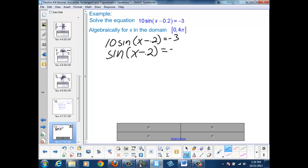Sin(x - 0.2) = -0.3. Now I need to get rid of the sine, so I'll take the arcsine of both sides. x - 0.2 equals arcsine of -0.3.